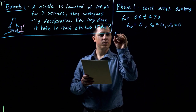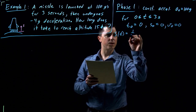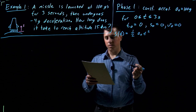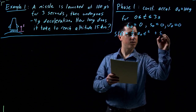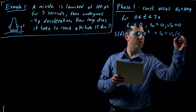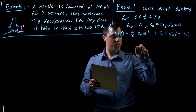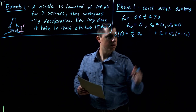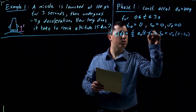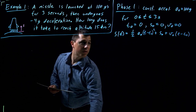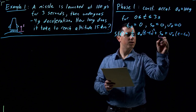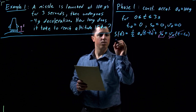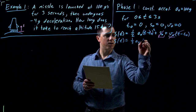For this first phase, our position with time is just one-half a-naught t squared, as we cancel out the other two terms. The full expression would be s-naught plus v-naught times (t minus t-naught) plus one-half a-naught (t minus t-naught) squared. Since s-naught is zero and v-naught is zero, those terms vanish, and we get s(t) = one-half a-naught t squared.